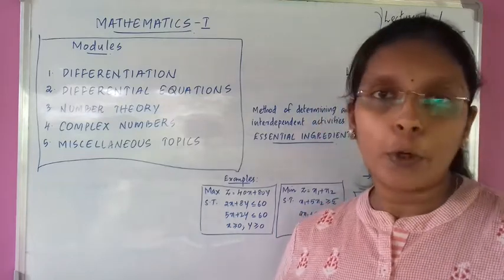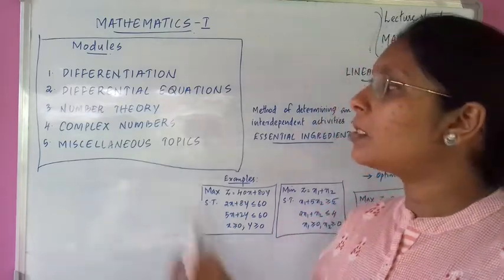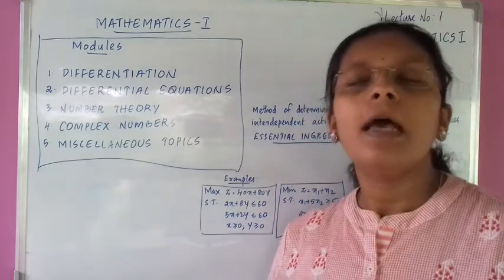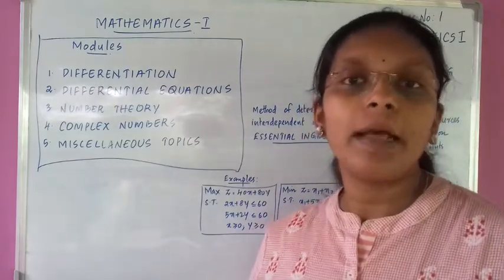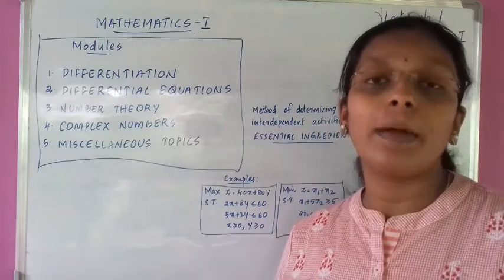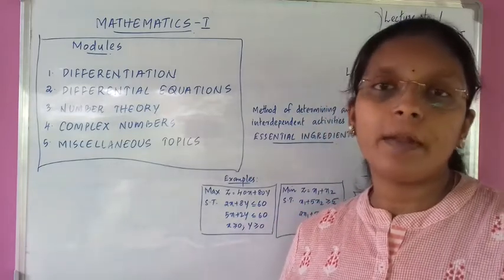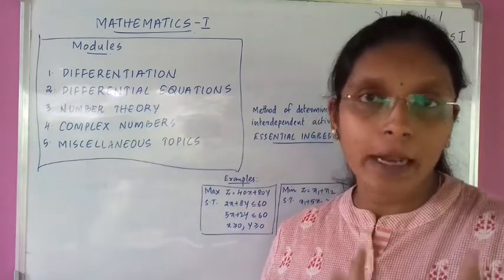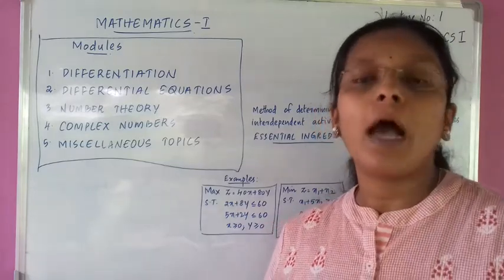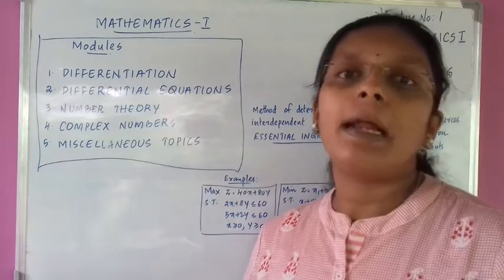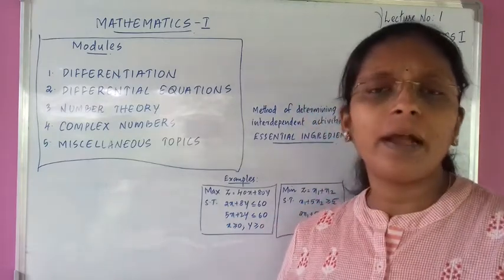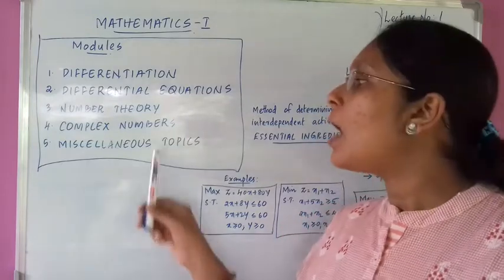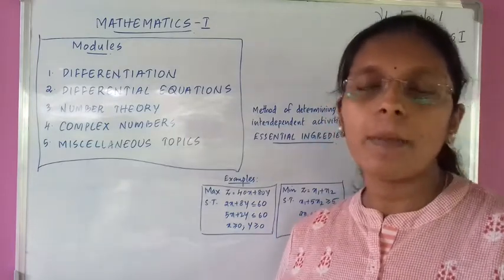The fourth module is about Complex Numbers. We learn from the plus one class. What are Complex Numbers? We learn from the Argand Plane — the real and imaginary parts of complex numbers.